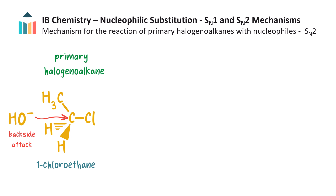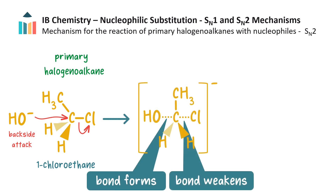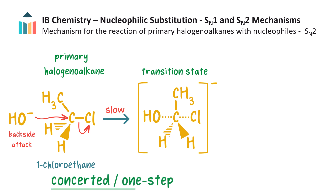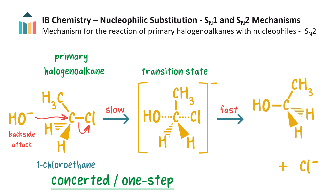Let's let the nucleophile be a hydroxide ion from warm aqueous sodium hydroxide, and the leaving group is chlorine. The nucleophile forms a weak bond to the electron deficient carbon and the carbon-halogen bond weakens. The carbon atom now has five bonds, which is an unstable state, and so this species exists for only a moment in time and is called a transition state. The transition state is always shown with dotted bond lines to the nucleophile and leaving group, square brackets, and a negative charge. This step of the mechanism is slow. Since both the bond formation and bond breaking processes occur at the same time, this is called a concerted or one-step reaction. There is no intermediate and the next step happens very rapidly with a heterolytic fission of the carbon-halogen bond. The products are a primary alcohol — in this case ethanol — as well as a chloride ion.